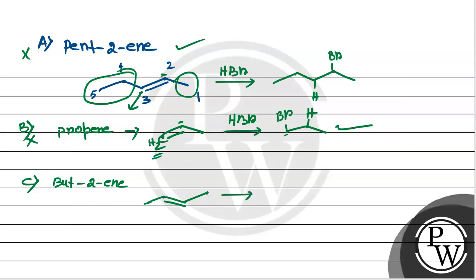The answer is C, but-2-ene, because it is symmetrical. There is no difference between the two carbons, so we cannot distinguish between Anti-Markovnikov product and Markovnikov product.